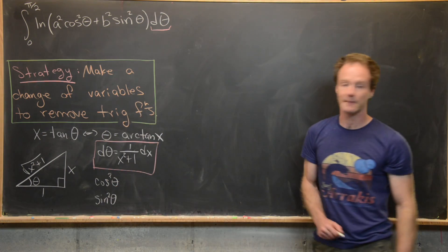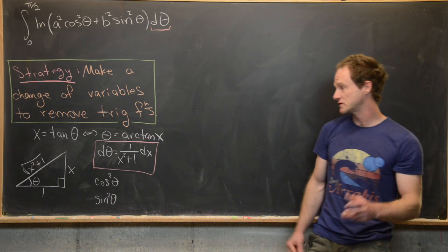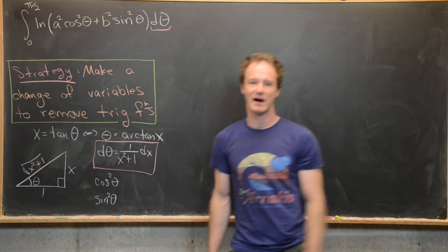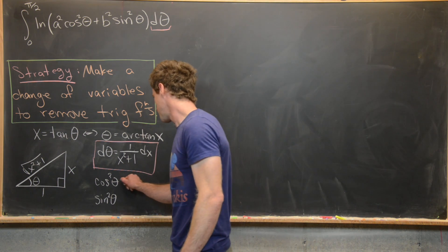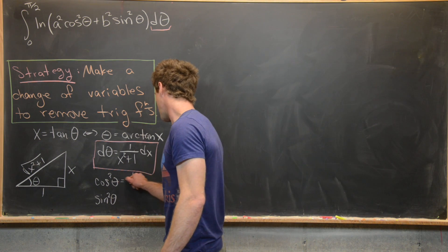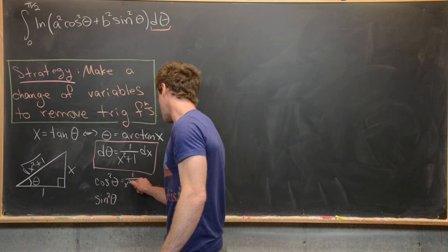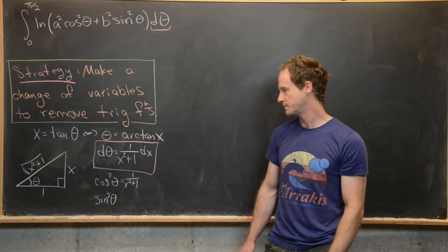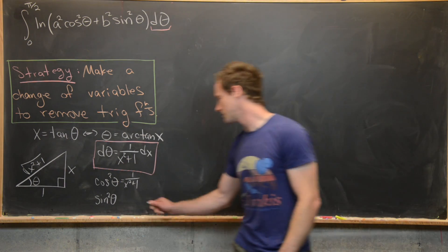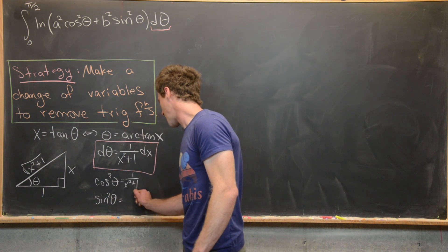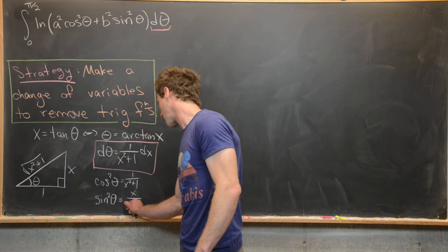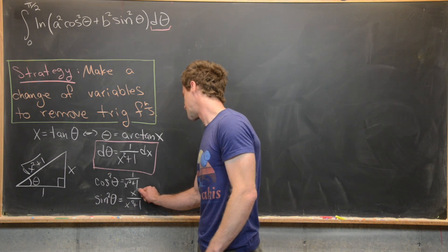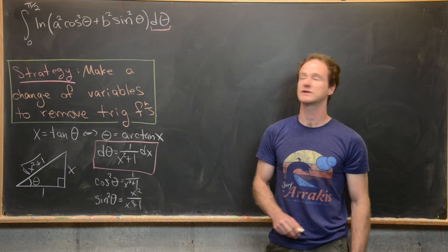Cosine squared theta is adjacent divided by hypotenuse, squared, which gives us one over x squared plus one — it's nice that the x squared plus one under the square root cancels. And similarly, sine squared theta is x squared over x squared plus one.